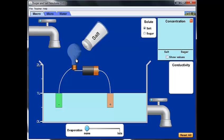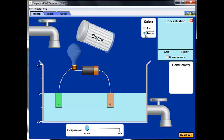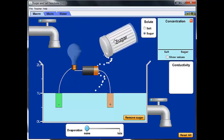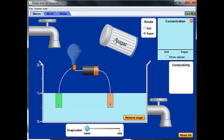Take a moment and predict what you think will happen to the conductivity of the water if we add in sugar. Notice how nothing happens to the conductivity of the water when the sugar is added.